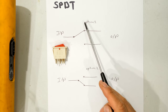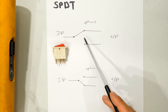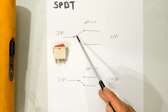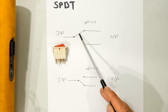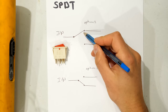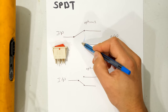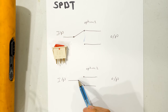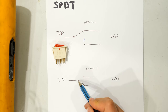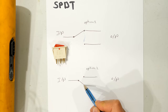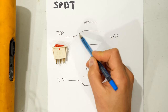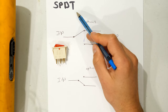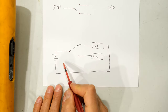Looking at the single pole double throw switch, we can see that we have one input but two outputs, so there are three connection points. The pole is the input, and this metal link is the lever which is either shorting out one connection or the other. So this lever can move to either short out that terminal or that terminal. If I change the switch's orientation you can see I've now shorted out from the input to the other terminal. This link is like the throw — a single pole but double throw — it can have two separate positions.